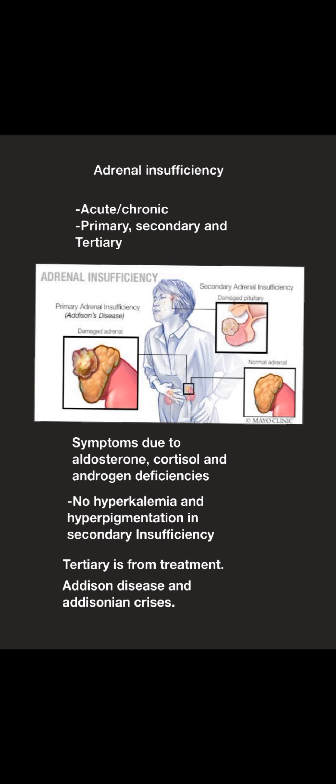Tertiary adrenal insufficiency usually occurs from treatment, specifically from abrupt cessation of chronic glucocorticoid therapy. Addison's disease is a chronic primary adrenal insufficiency caused by adrenal atrophy or destruction. In resource-rich countries such as the US and UK, it is commonly due to autoimmune adrenalitis, whereas in resource-limited countries like Pakistan, it is most commonly due to TB.